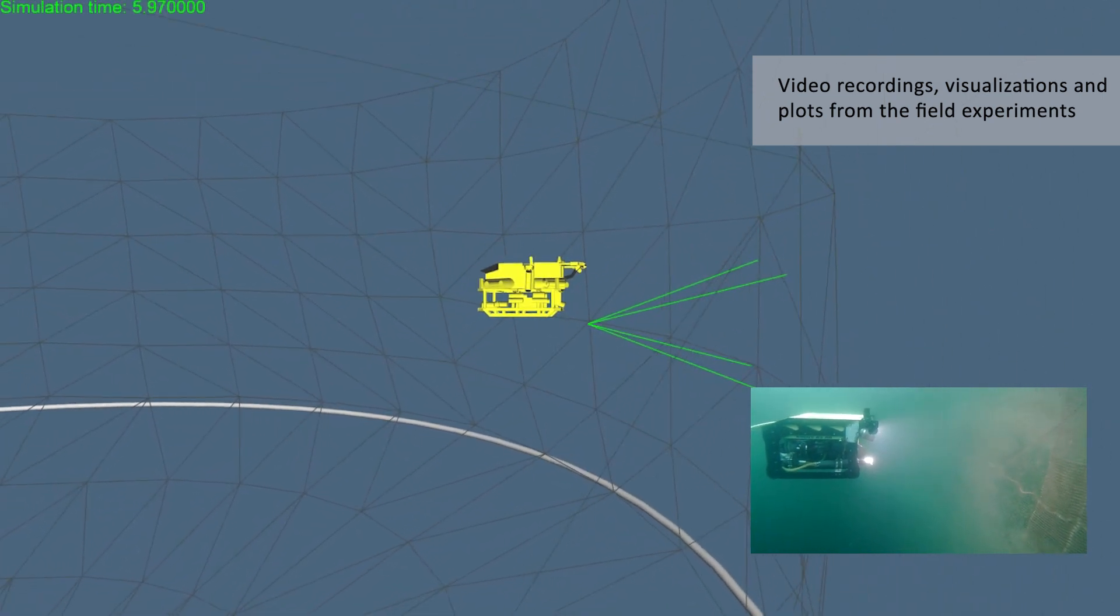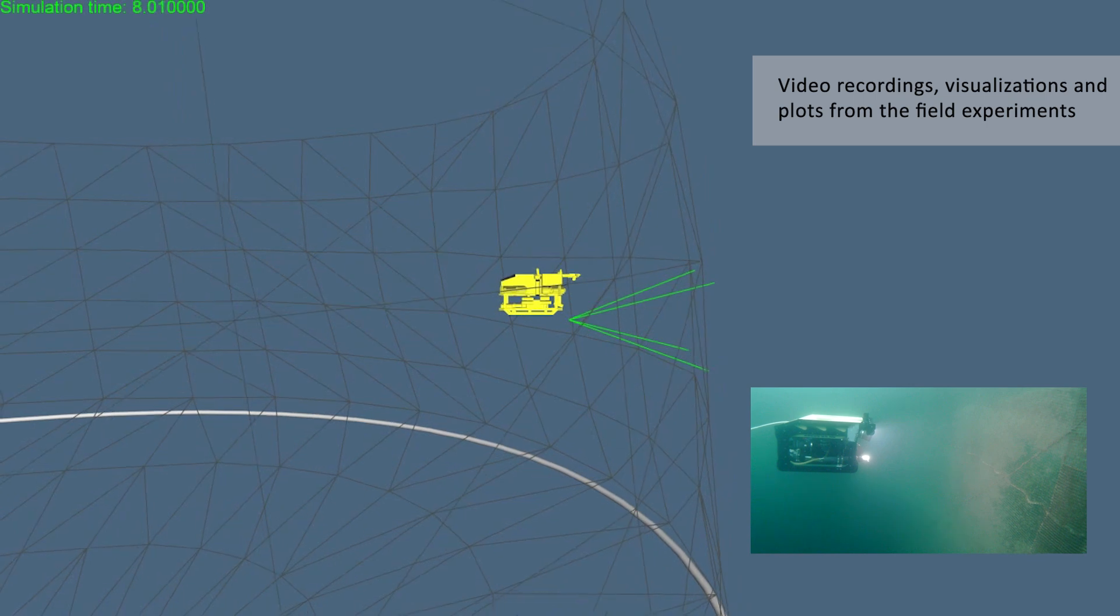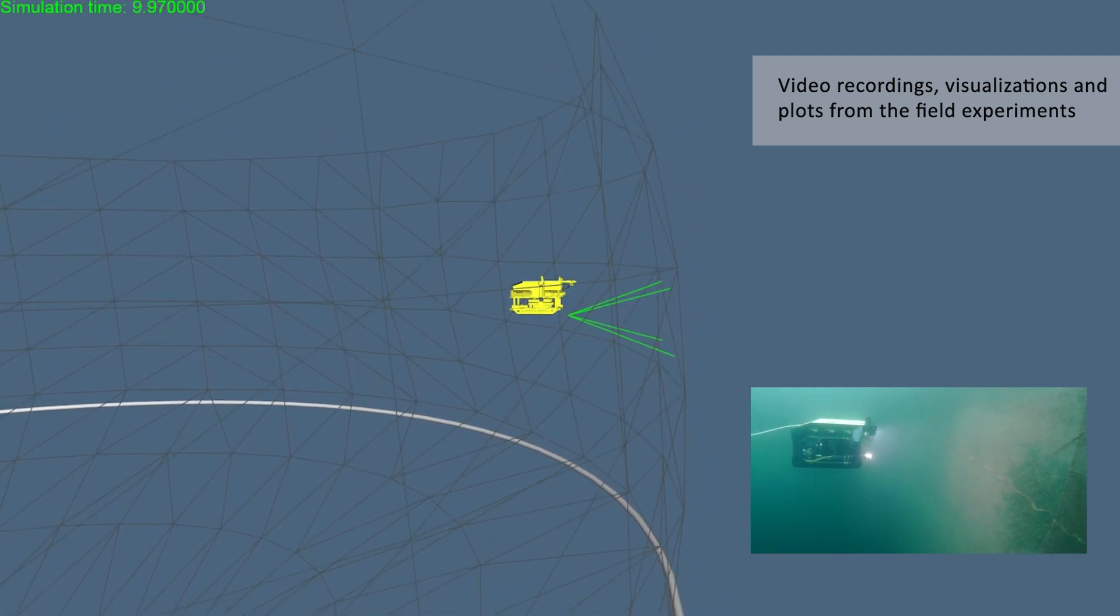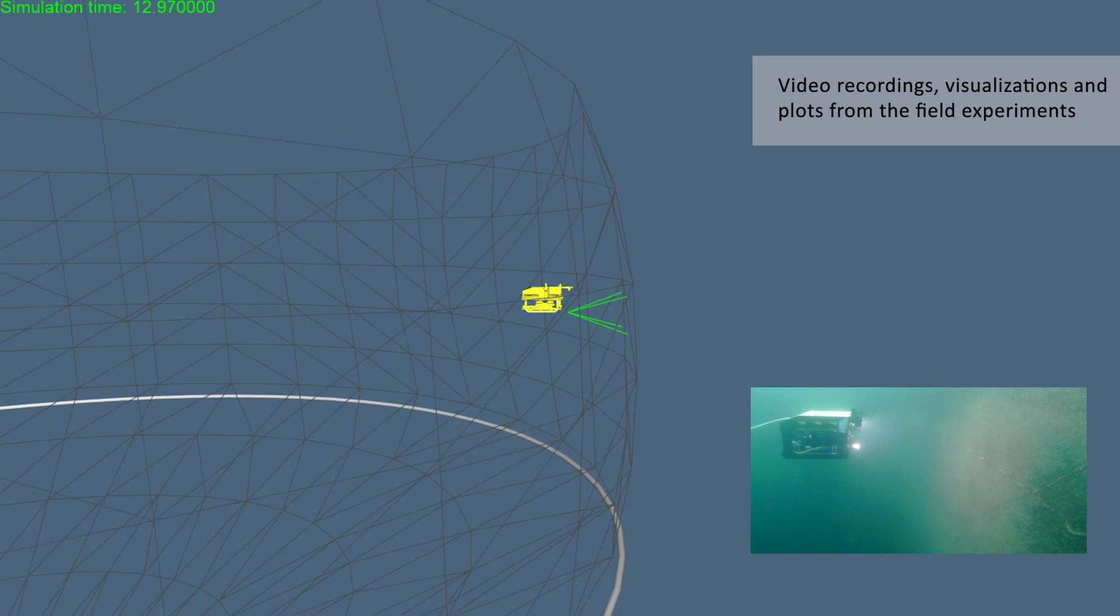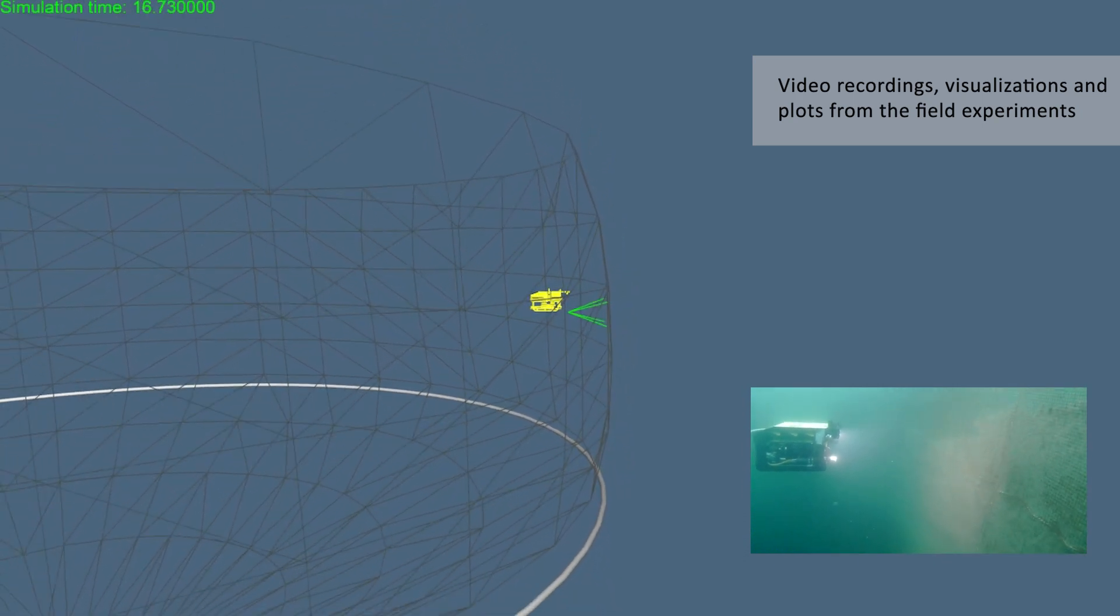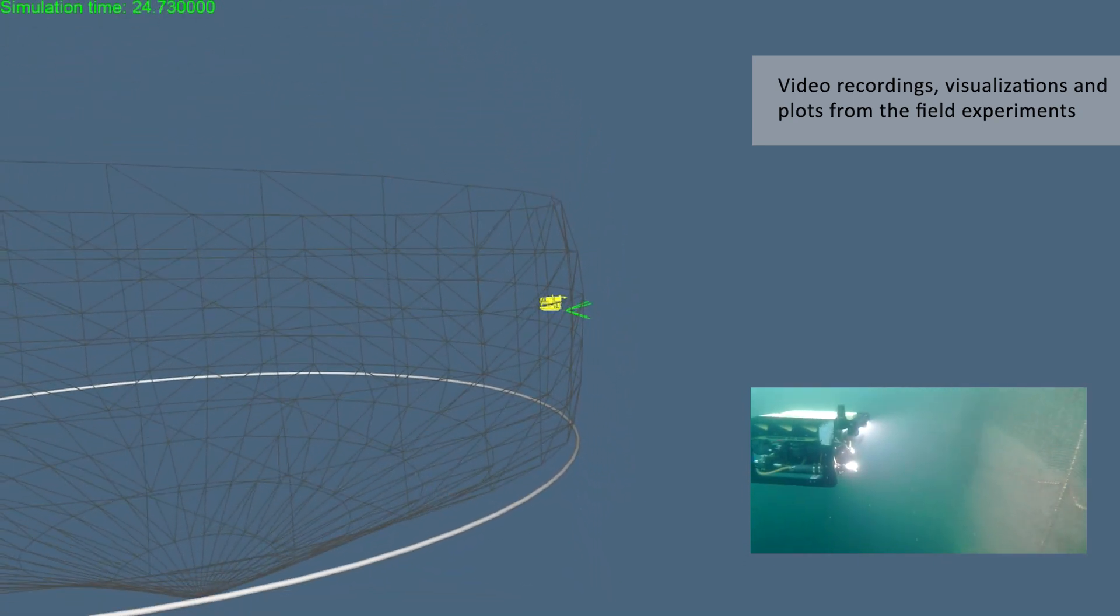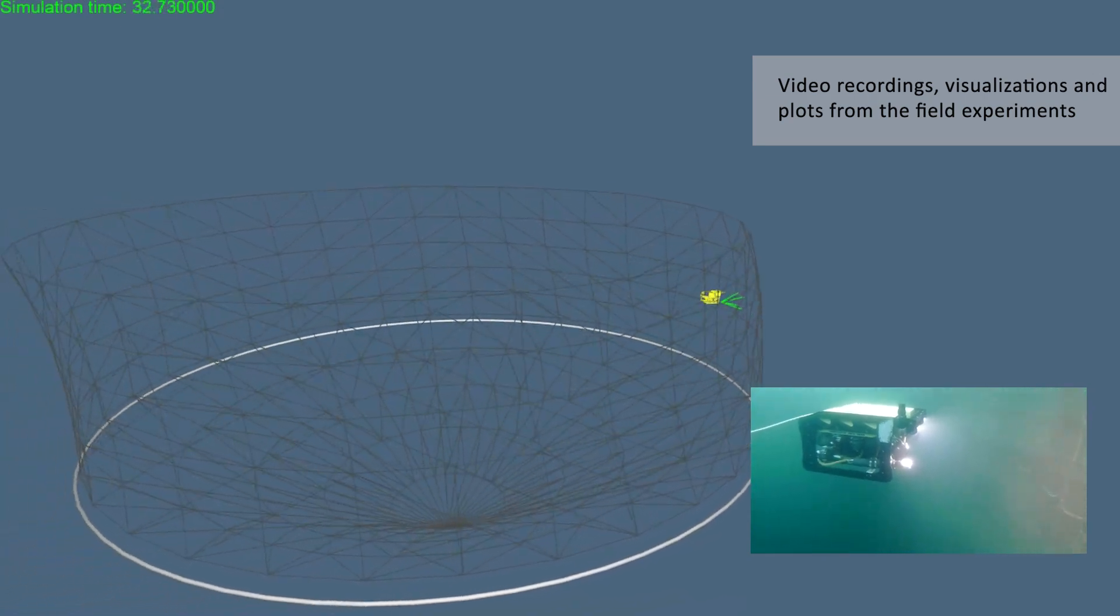In one set of experiments, we had the ROV traverse the inner perimeter of the net pen at a set distance in a full circle. The results showed that the method was able to maintain an estimate of the entire net pen and a highly accurate estimate of the robot's position relative to the net in front of it.